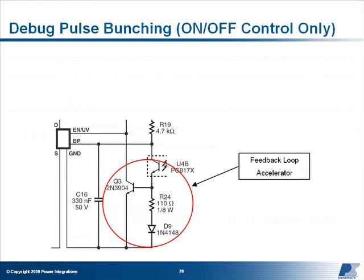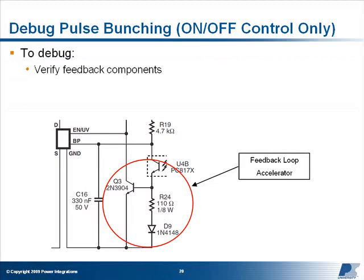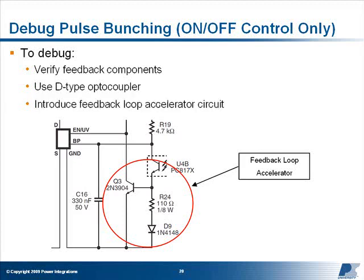Pulse bunching in a design indicates that the feedback circuit is too slow, introducing lag into the controller's response. Begin debugging this problem by first verifying that all the component values in your feedback circuit match those specified by PI Expert. Also try using a D-type optocoupler in your design, which has a much higher gain than standard optocouplers. You may also wish to add the feedback loop accelerator circuit shown here to improve your response times.